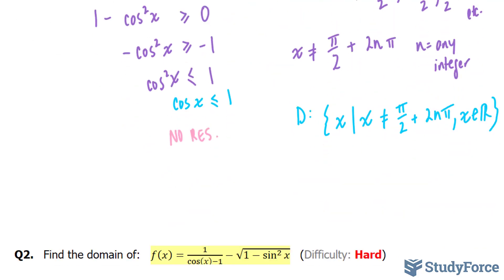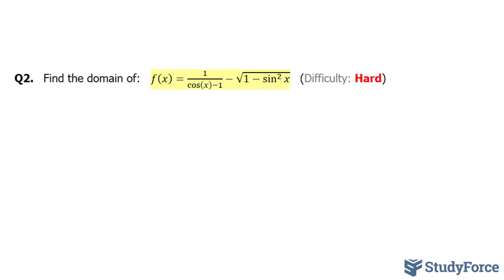Let's move on to part two. In this question, we are asked to find the domain of this function. f(x) is equal to 1/(cos(x)-1) - √(1-sin²x).